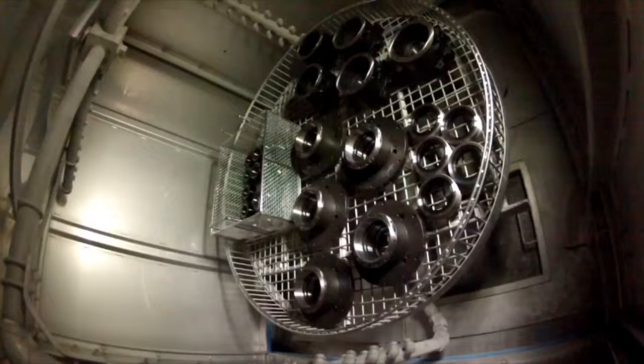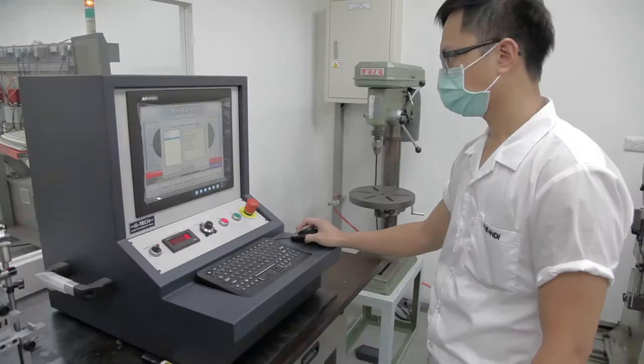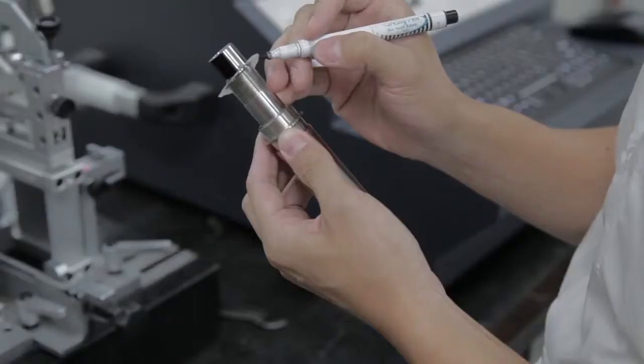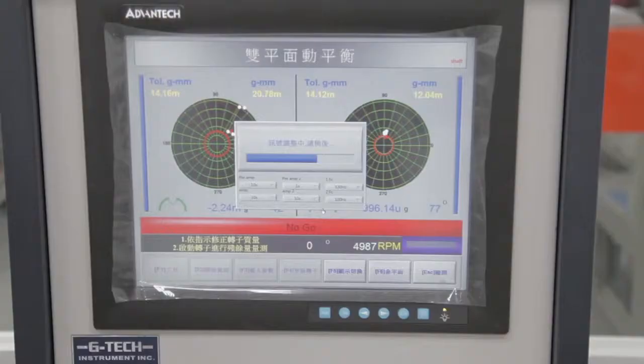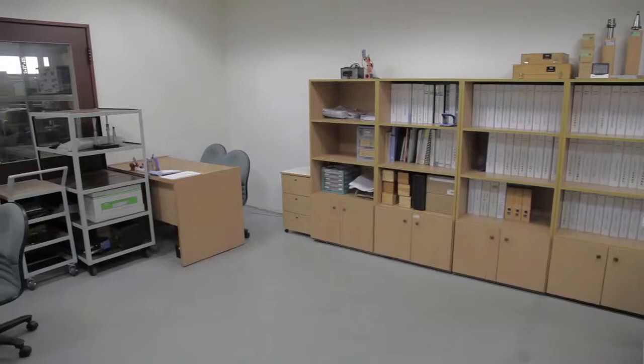The first step in ensuring spindles meet industry demands is the Manufacturing Execution System, known as MES. MES is a database that controls every aspect of the building process, including quality control, inspection results, and formation of service records.